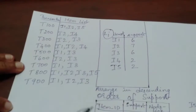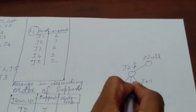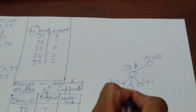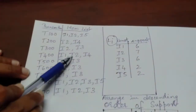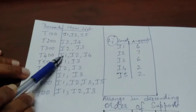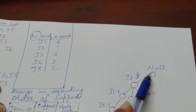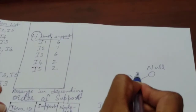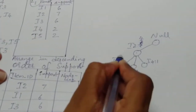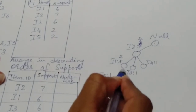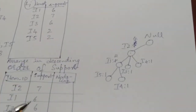The third transaction is I2, I3. The null node already has an I2 branch, so I change the count to 3 and add I3 with support 1. The fourth transaction is I1, I2, I4, which reorders to I2, I1, I4. I2 becomes support 4. I already have I1 connected to I2, so I change its support to 2. But I1 does not yet have an I4 child, so I create a new I4 node with support 1.